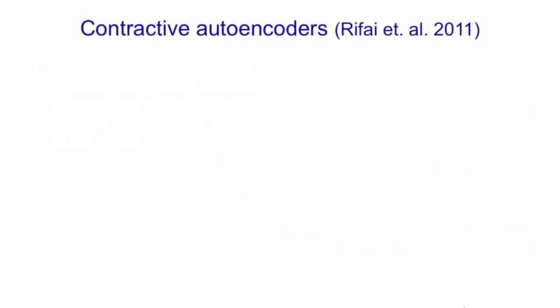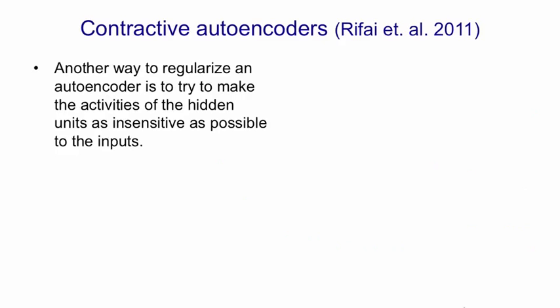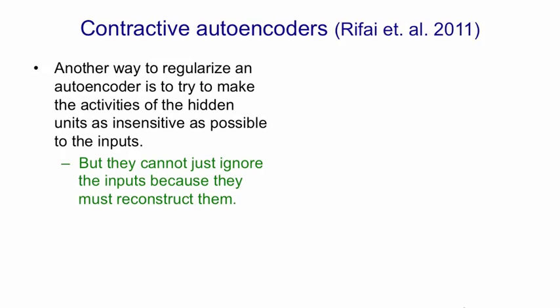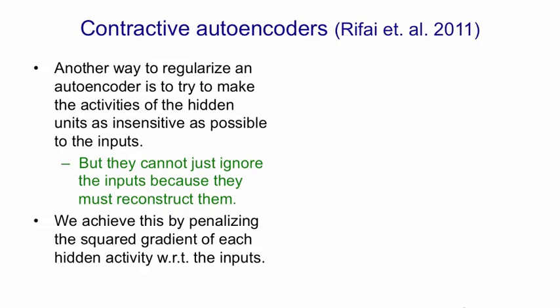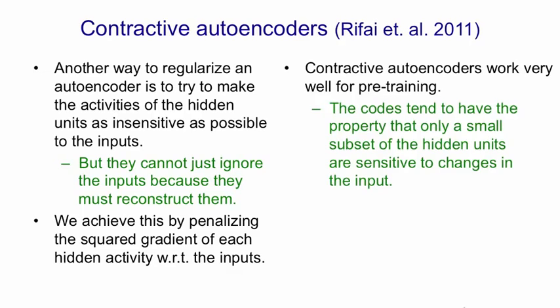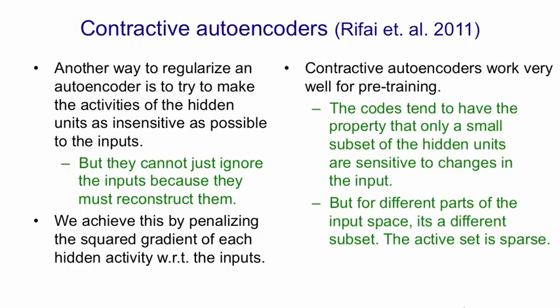Yet another kind of autoencoder is the contractive autoencoder, also developed by the Group of Montreal. The way this works is that we try to make the hidden activities be as insensitive as possible to the inputs. Of course, the hidden units can't just ignore the inputs altogether because they have to be able to reconstruct them. We achieve this insensitivity by penalising the squared gradient of each hidden unit with respect to each input, so we try to make each hidden unit so that it won't change much if we change an input value. Contractive autoencoders also work very well for pre-training. Their codes tend to have the property that only a small subset of the hidden units are in their sensitive range, and for different parts of the space it's a different subset, so this active set acts like a sparse code. The other hidden units are all saturated and insensitive.